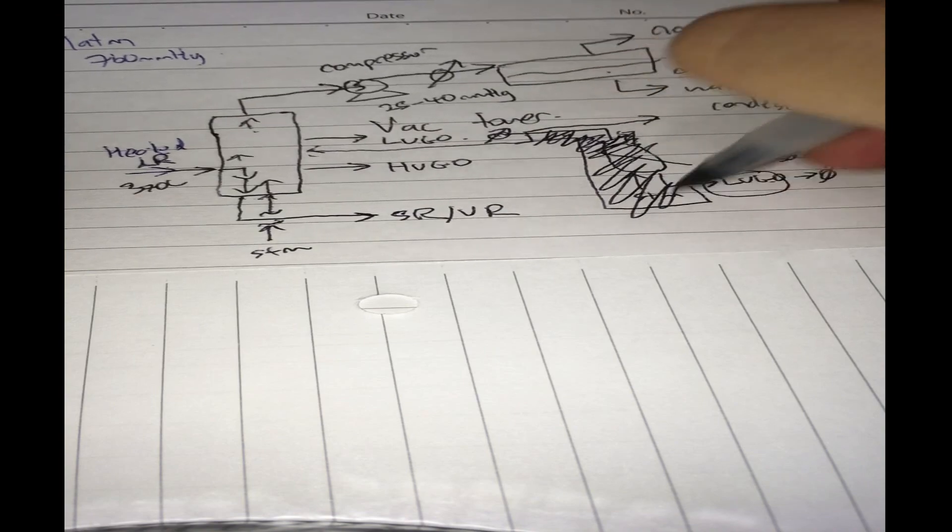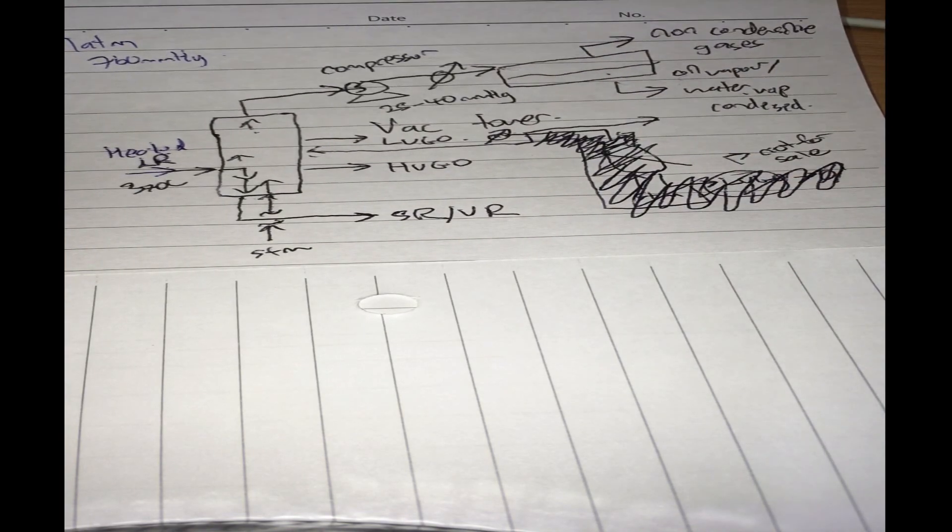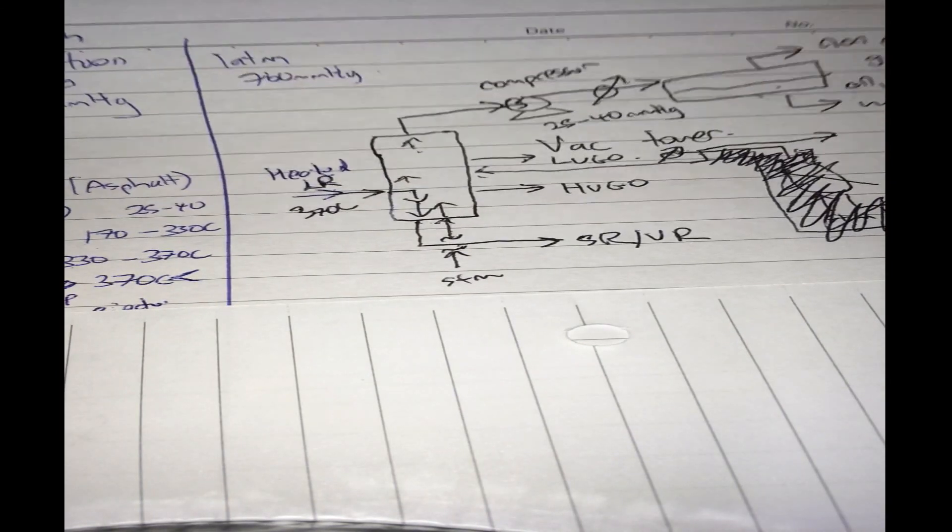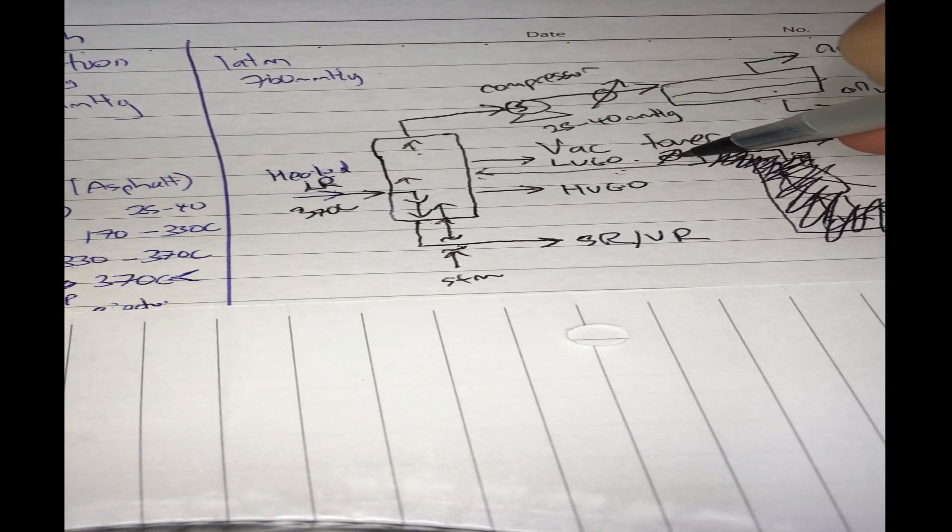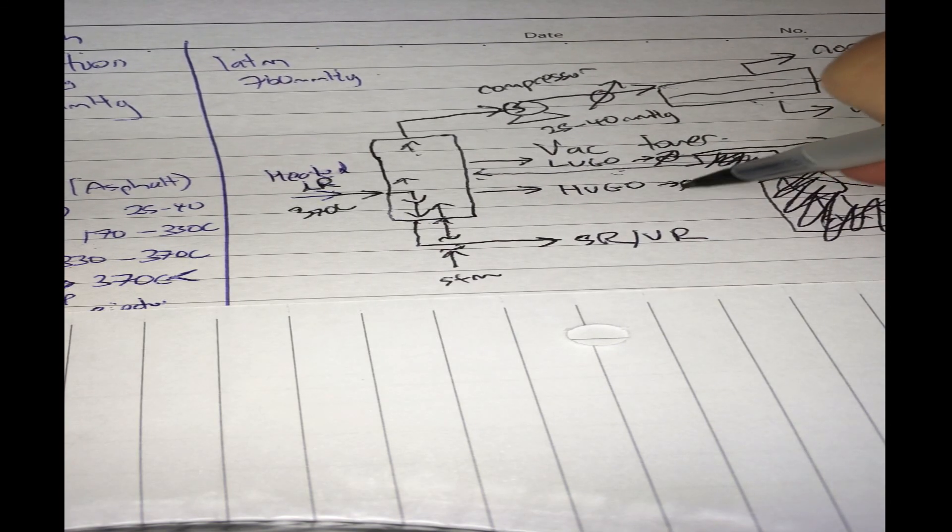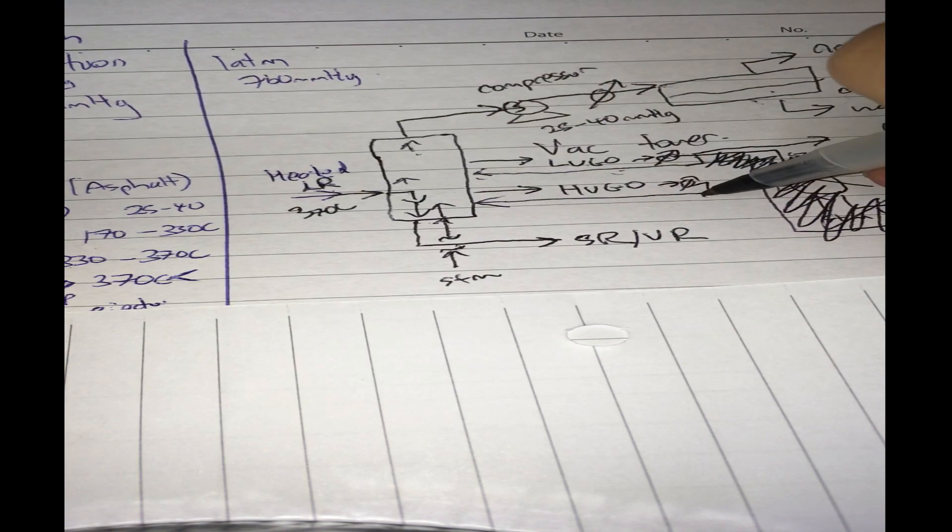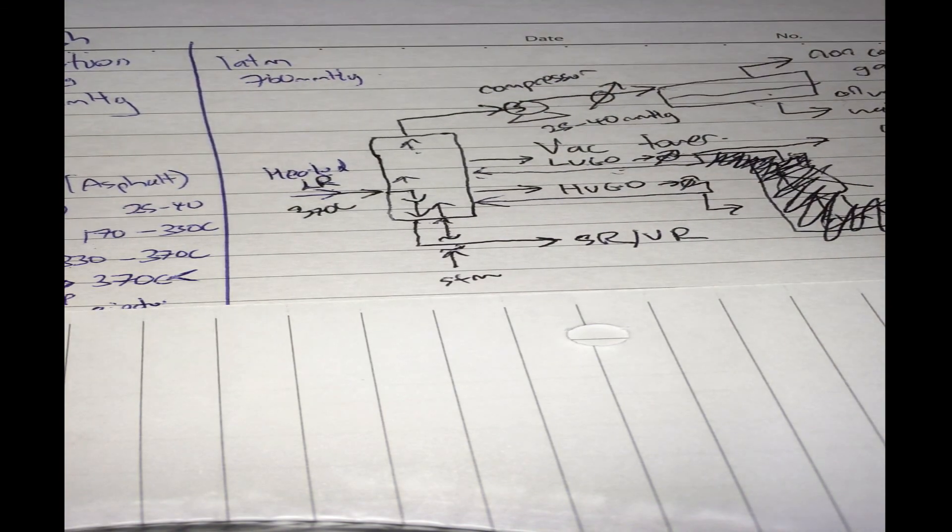I don't need it at all, no steam stripper. So our reflux will not come from here, it will come from here. One of the ways is that it will come from here, so we take out the heavy vacuum gas oil, again we can reflux some of it and we draw some of it out.